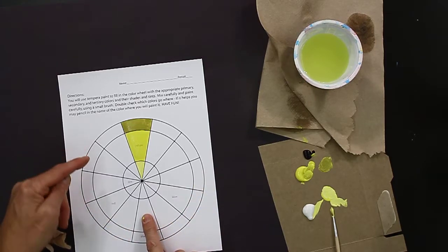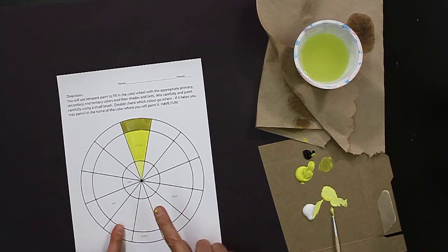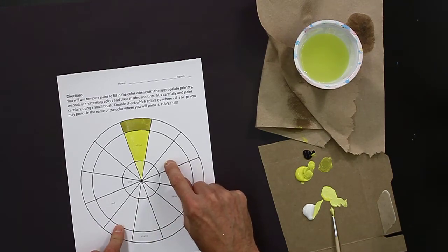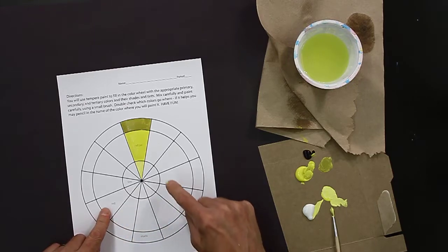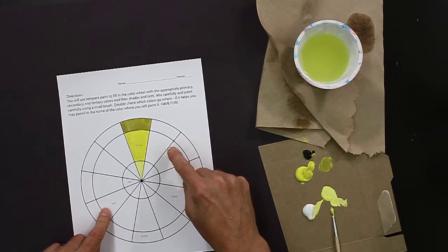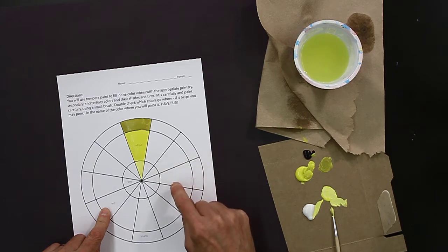Now, if it helps you, you can very lightly pencil in the name of the color that's going to go in that particular slot. I've given you red, blue, and yellow. And if you want to and it helps you, go ahead and pencil those in and you can do those on your own.